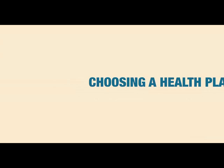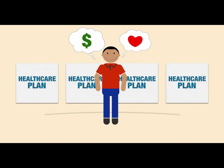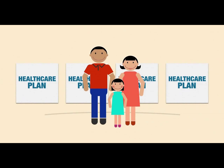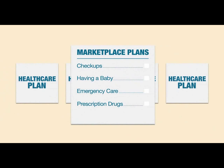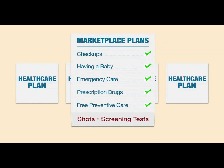How do you find a health insurance plan that fits your budget and meets your needs? A good plan protects you and your family at a price that's right for you. All marketplace plans cover a core set of essential health benefits like checkups, having a baby, emergency care, prescription drugs, and more. Most marketplace plans must also include free preventive care like shots and screening tests. And don't worry if you have a pre-existing condition — you'll see the same plans at the same cost as everyone else.